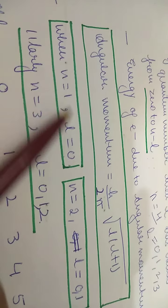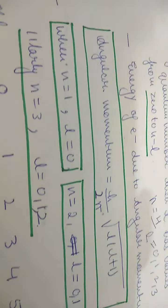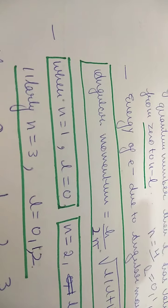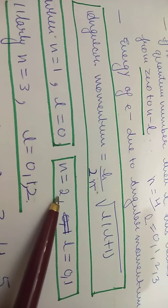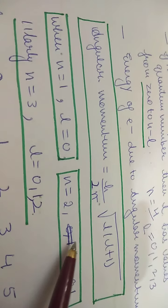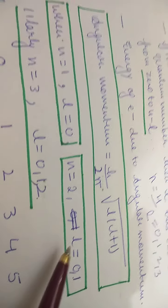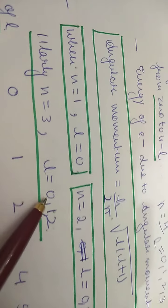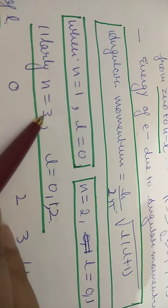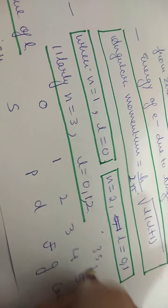When n = 1, L = 0, meaning only the 1S sub-shell exists. When n = 2, L = 0 and 1, meaning the 2S and 2P sub-shells exist. When n = 3, L = 0, 1, and 2, so 3S, 3P, and 3D are all possible.